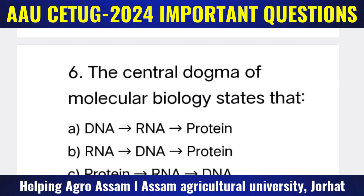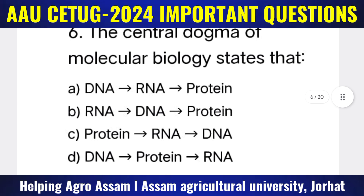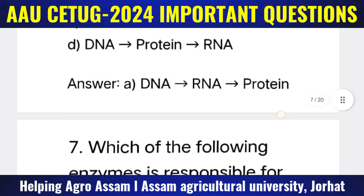Question 6: The central dogma of molecular biology states that — Options: (A) DNA to RNA, RNA to protein; (B) RNA to DNA, DNA to protein; (C) Protein to RNA, RNA to DNA; (D) DNA to protein, protein to RNA. The correct answer is option A — DNA to RNA, then RNA to protein.